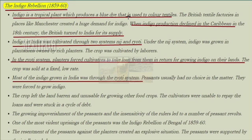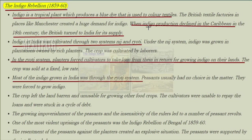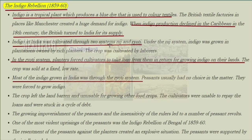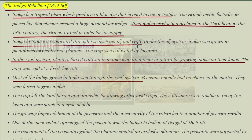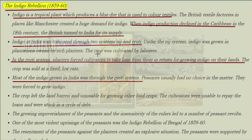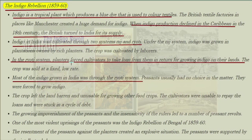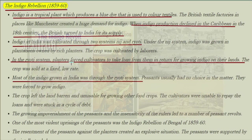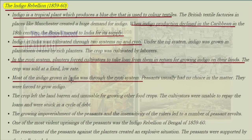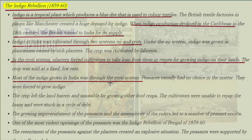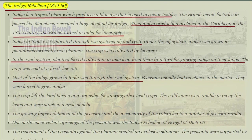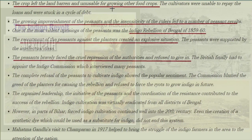The Indigo Rebellion of 1859–1860: indigo is a tropical plant which produces a blue dye used to colour textiles. British textile factories in places like Manchester created a huge demand for indigo. When indigo production declined in the Caribbean region in the 18th century, the British turned to India for its supply. Indigo in India was cultivated through two systems: Nij and Ryoti. Under the Nij system, indigo was grown in plantations owned by rich planters, cultivated by labourers. In the Ryoti system, planters forced cultivators to take loans from them in return for growing indigo on their lands. The crop was sold at a fixed low rate, and the crop left the land barren and unusable for growing other food crops.